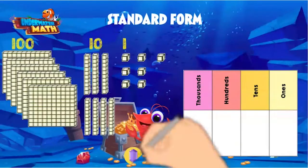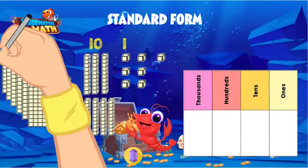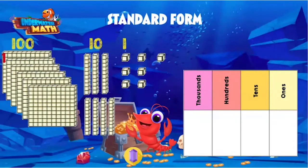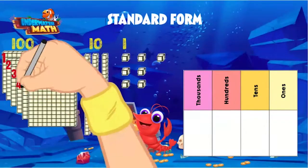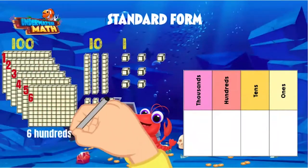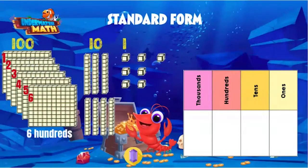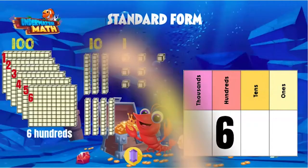Let's do another. What would the value of gold be if I added this gem to the treasure? First, let's look at the base 10 blocks. How many hundreds do we have? 100, 200, 300, 400, 500, 600. What's the value of 600? Yes — 600.